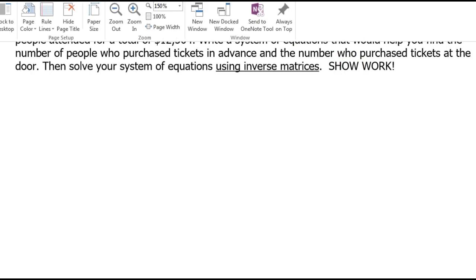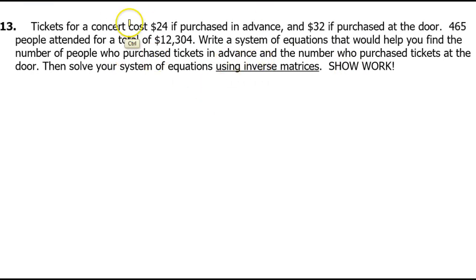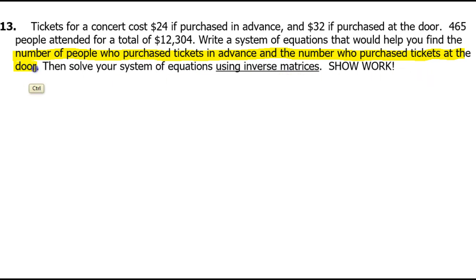This is a relatively straightforward system with only two equations. The key is to focus on the sentence that asks the question — it tells us what the variables need to be. We will let X represent the number of tickets purchased in advance, and we will let Y be the number of tickets purchased at the door.